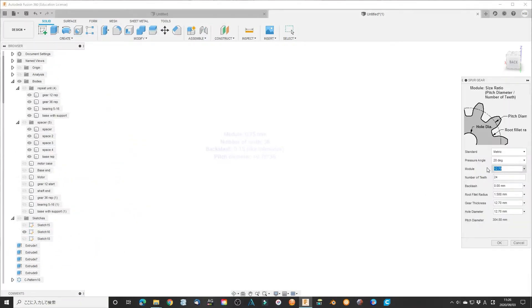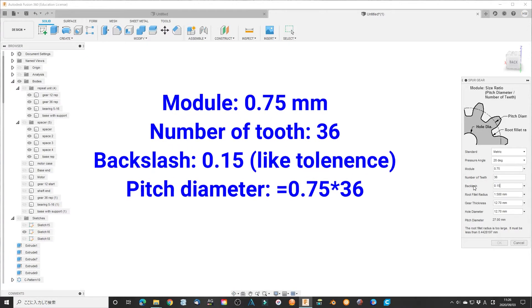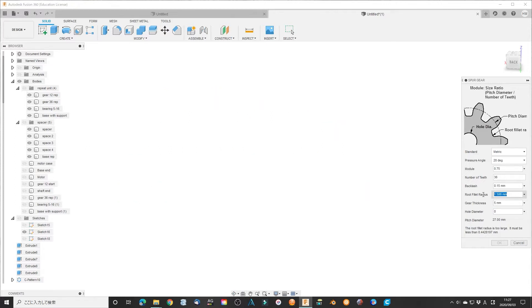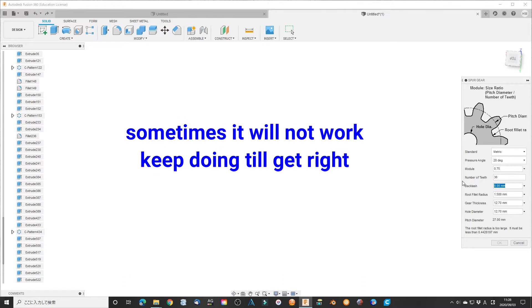Add a large gear with 36 teeth. Other parameters are listed here, which I used this time. Click OK. Sometimes it will not work. You just keep doing it again until it works for you.